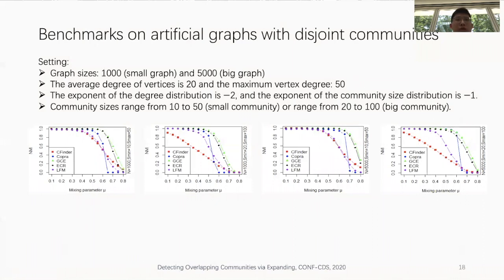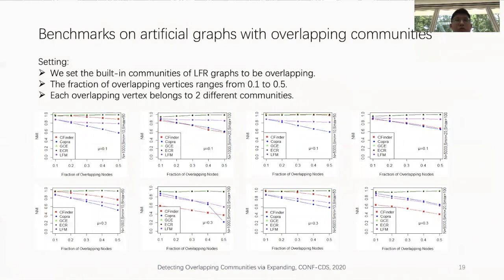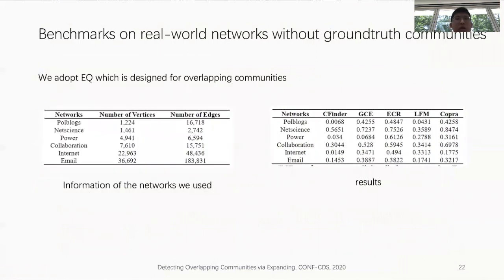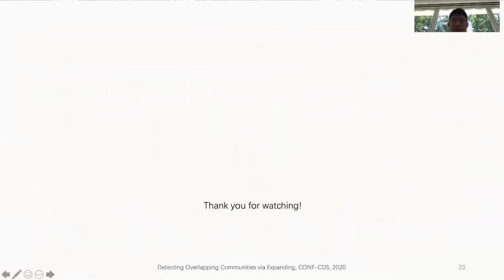In experiment A, section 4, we present benchmarks on artificial graphs with disjoint communities. Experiment B covers benchmarks on artificial graphs with overlapping communities. Experiment C presents benchmarks on real-world networks with ground-truth communities. Experiment D covers benchmarks on real-world networks without ground-truth communities. That's all for my presentation. Thank you very much.